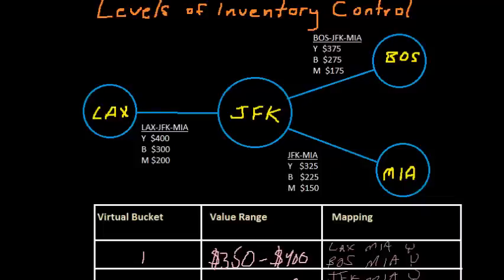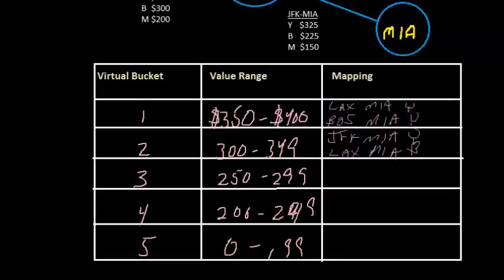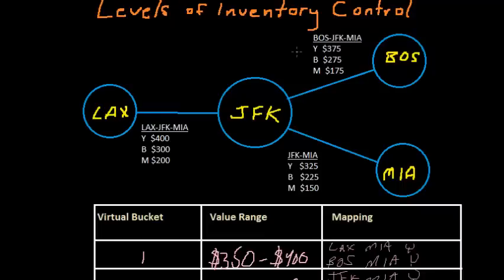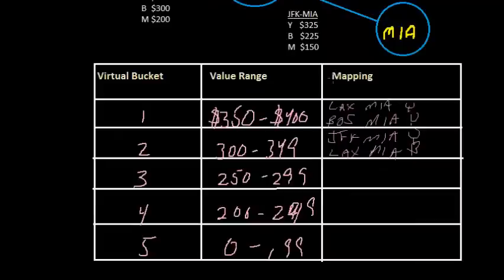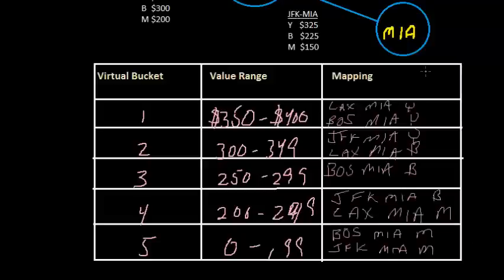The next highest value is LAX Miami in the B class. And then the next one, let's just do one more and then I'll complete this. Let me just go back up and see the next highest value is I believe the Boston Miami in the B class at $275. So we'll write that one here. Boston Miami in the B class. And I'll just fill these in now.